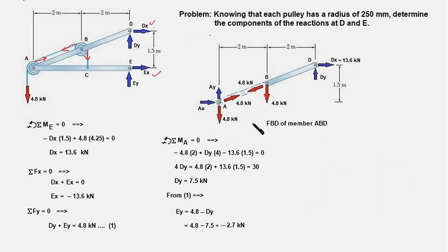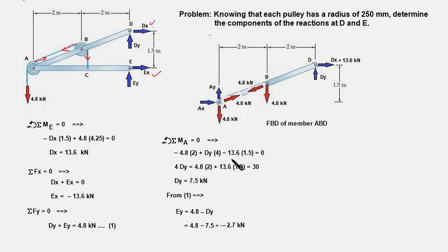In this FBD, we take the moment of all forces about point A. All forces at A are eliminated. The 4.8 kN force acting at B also passes through point A and therefore does not contribute to the moment. The other 4.8 kN force produces a clockwise moment with a moment arm of 2 meters, giving minus 4.8 times 2. DY times 4 produces an anticlockwise moment, so it is positive. DX of 13.6 kN again produces a clockwise moment with a moment arm of 1.5 meters, giving minus 13.6 times 1.5. Solving this equation, DY equals 7.5 kN.